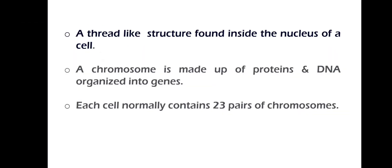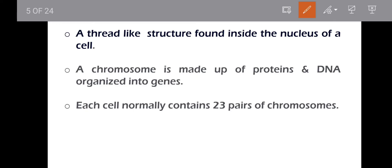So we can define a chromosome as a thread-like structure found inside the nucleus of a cell. A chromosome is made up of proteins and DNA organized into genes. Each cell normally contains 23 pairs of chromosomes.